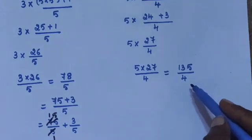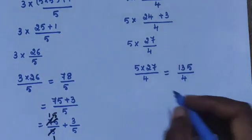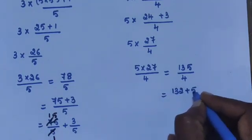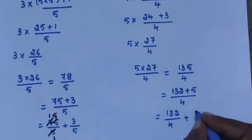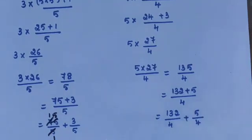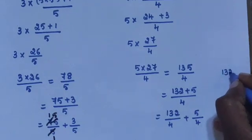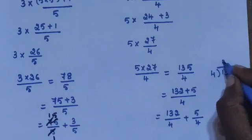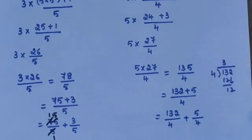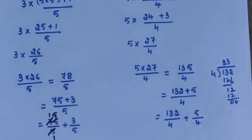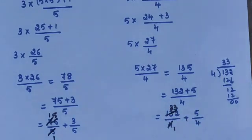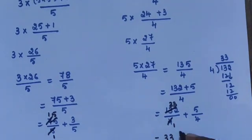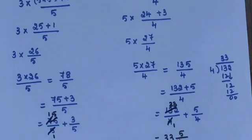135 is not directly divisible by 4, so convert into mixed fraction: 135 = 132 + 3. 132 ÷ 4 = 33. So the final answer is 33¾ — wait, 33 and 3/4 — expressed as the mixed fraction 33³/₄.